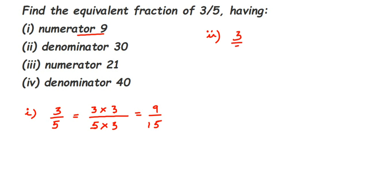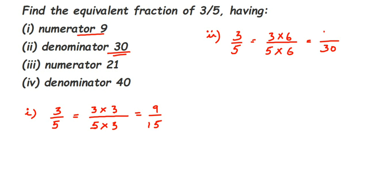The second condition is denominator 30. Since 30 is greater than 5, we're multiplying. What do we multiply with 5 to get 30? It's 6. So we multiply both numerator and denominator by 6: 3 × 6 = 18 and 5 × 6 = 30. So the equivalent fraction is 18/30.